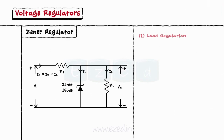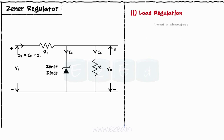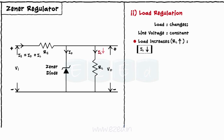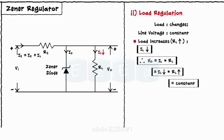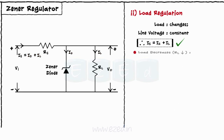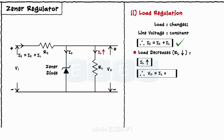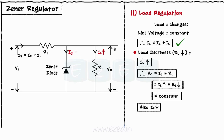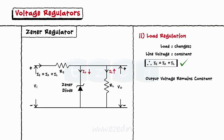The next type is load regulation. In this case, we vary the load and keep the line voltage constant. If we increase the load, the load current decreases, and the product V0 = IL × RL remains constant. Simultaneously, current through the Zener diode increases, so the equation IS = IZ + IL is satisfied. If we decrease the load, the load current increases, so the product V0 = IL × RL again remains constant, and simultaneously current through the Zener diode decreases, again satisfying IS = IZ + IL. Hence, the output voltage remains constant, providing load regulation.